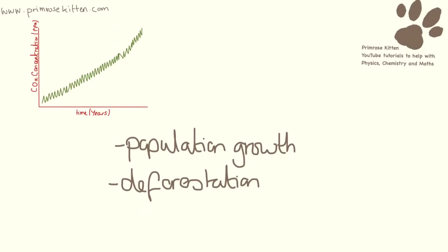Our planet is undergoing a time of incredibly fast population growth. The more people there are on the planet, the more homes we need, the more schools we need, the more workplaces we need. The more places we need to heat, the more places we need to use electricity to light. So we need more electricity to cope with the increased demand from the growing population, which means we need to burn more fossil fuels. This is one reason for the increase in carbon dioxide in the atmosphere.